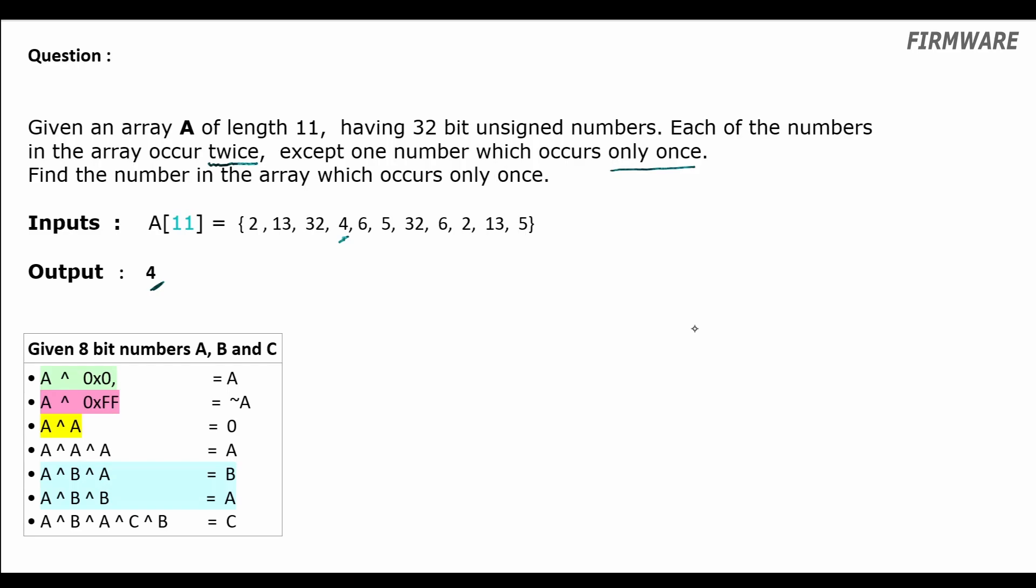Moving to the solution, here we have XOR operations on three numbers A, B, and C. We know that A XOR 0 is always A, and A XOR A is always zero. Therefore, A XOR B XOR A will be B, and A XOR B XOR B will be A. Also, A XOR B XOR A XOR C XOR B will be C.